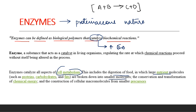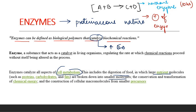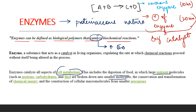If this reaction takes place normally without enzyme, say it takes 10 hours. But in the presence of enzyme, it takes only 20 minutes. So this is how enzymes work — the time interval is reduced and it speeds up the reaction. That is why we call enzyme a catalyst.